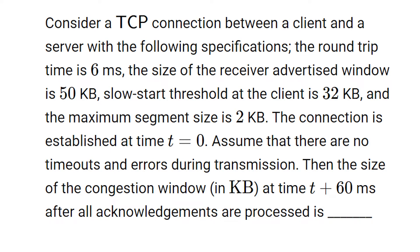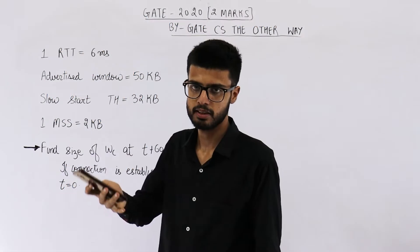The round trip time is 6 milliseconds. The size of receiver advertised window is 50 KB. Slow start threshold at client is 32 KB. And the maximum segment size is 2 KB. The connection is established at time t equals 0. Assume that there are no timeouts and errors during transmission. Then the size of the congestion window in KB at time t plus 60 milliseconds after all acknowledgements are processed is.